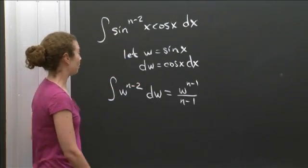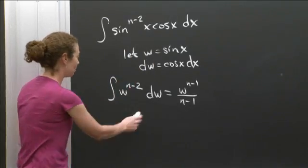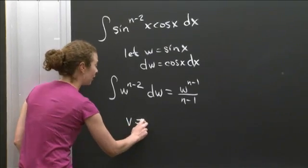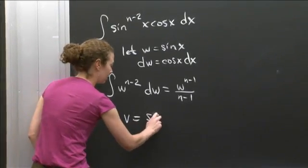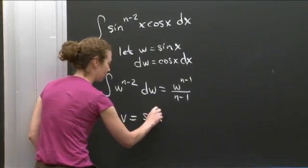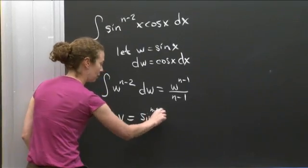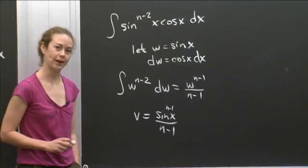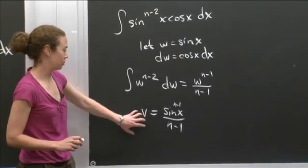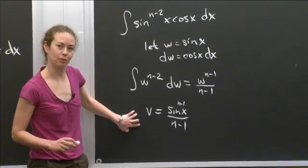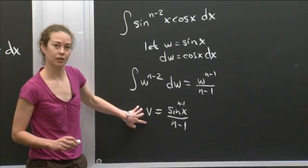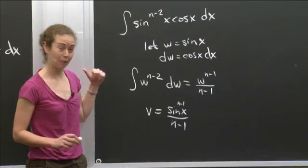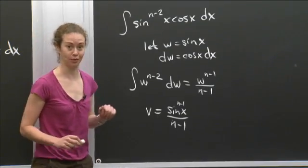This tells me that v is equal to sine x to the n minus 1 over n minus 1. This side calculation was to help us in the middle of the problem — this was the v we needed. So let's come back, fill in the gap, and finish the problem.